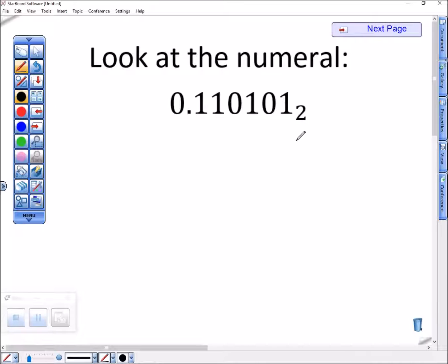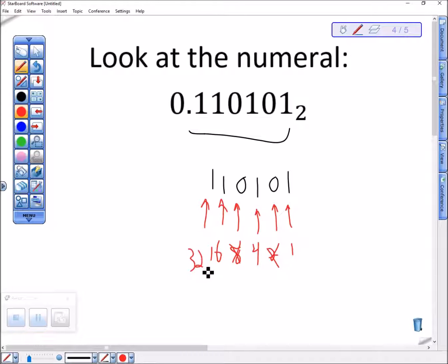Okay, let's look at another one. So here I want to look at just these guys first. One, one, zero, one, zero, one. This is a one. I have no twos. This is a four. I have no eights. This is a sixteen. This is a thirty-two. Thirty-two plus sixteen is forty-eight. Fifty-two, fifty-three. This numeral is fifty-three.